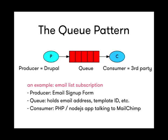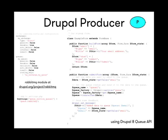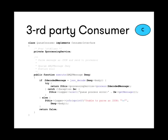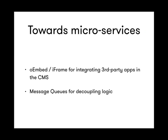For this purpose we wrote the RabbitMQ module — RabbitMQ being one of the main queue messaging systems out there. We're actually moving towards microservices by starting to decouple logic like this. We use OEmbed/iframe for integrating third-party apps and message queues for decoupling logic of two things that don't belong together. That's a very powerful system for building microservices, allowing you to work on different software components independently.